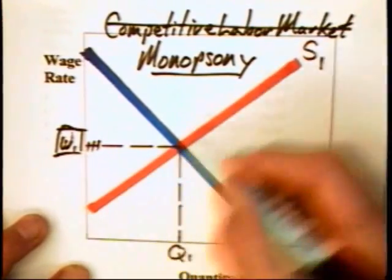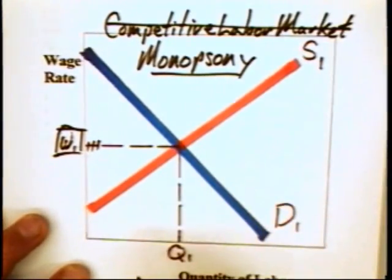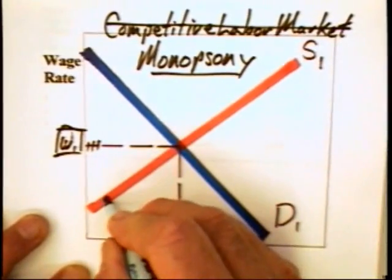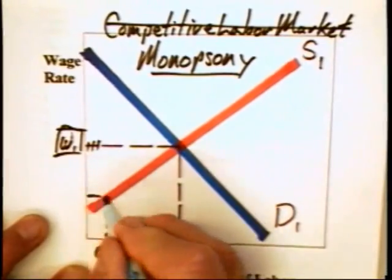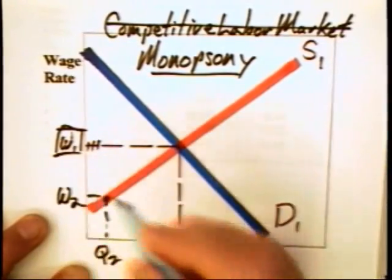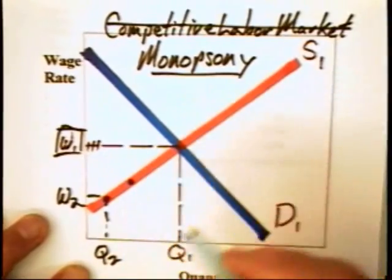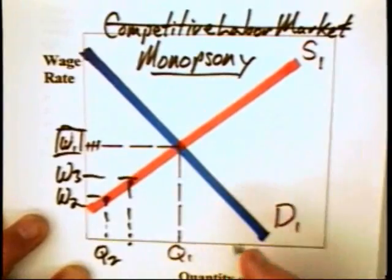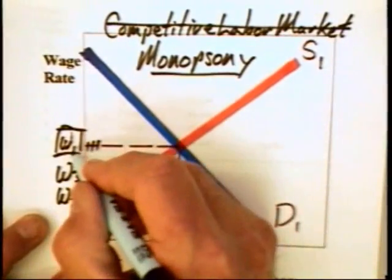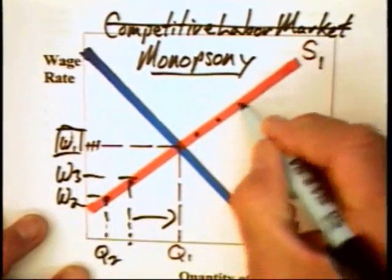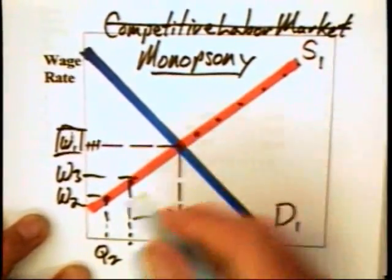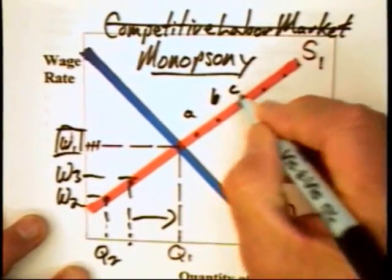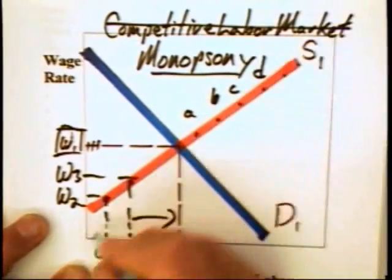The monopsony faces an upward-sloping supply curve S1. That is, it could hire quantity Q2 down here and do so by paying a wage rate of W2. It can increase its quantity demanded, but it would have to raise its wage rate — it could go up to Q1 and end up paying W1. The monopsony can choose any wage-quantity combination along this supply curve.